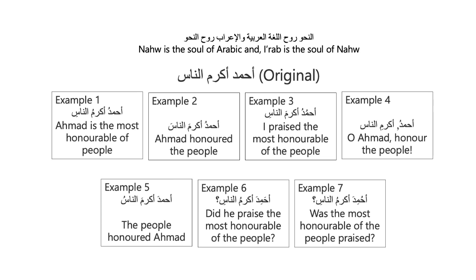How is it different in example four? 'Ahmadu Akraman Naas' — O Ahmad, honour the people. Example five: 'Ahmadu Akraman Naas' — the people honoured Ahmad. Example six: 'Ahamida Akraman Naas' — did he praise the most honourable of the people? And finally, example seven: 'Ahumida Akraman Naas' — was the most honourable of the people praised?